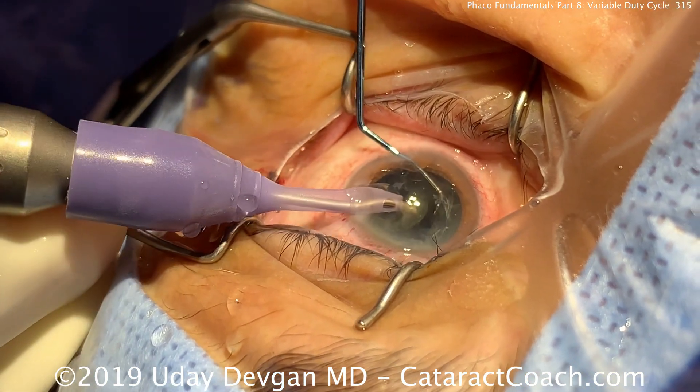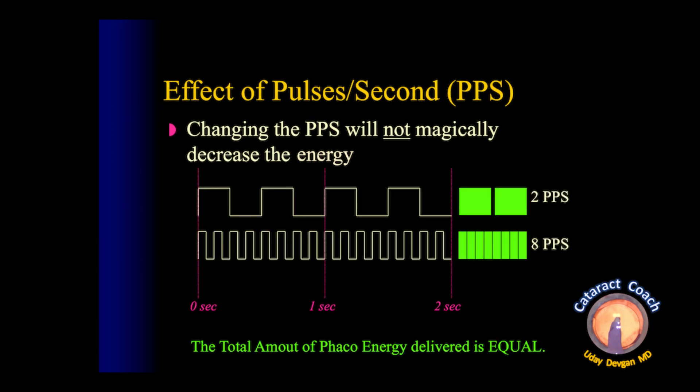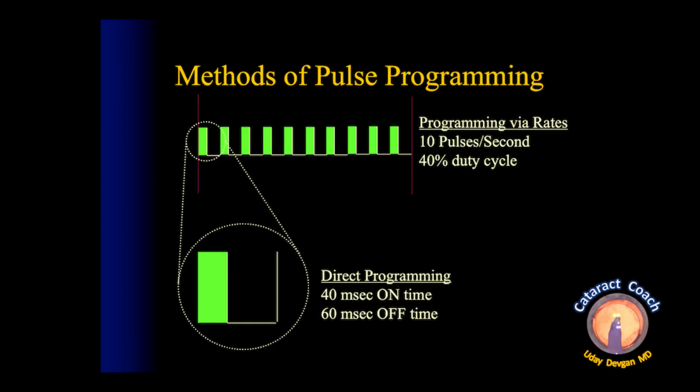Remember: changing the pulses per second does not magically change the total amount of energy. Two pulses per second and eight pulses per second actually deliver the same total amount of energy — so that's not changing the total energy. We can program the pulses by a direct rate, such as 10 pulses per second at 40% duty cycle, or directly as 40 milliseconds on and 16 milliseconds off — these are the same thing.